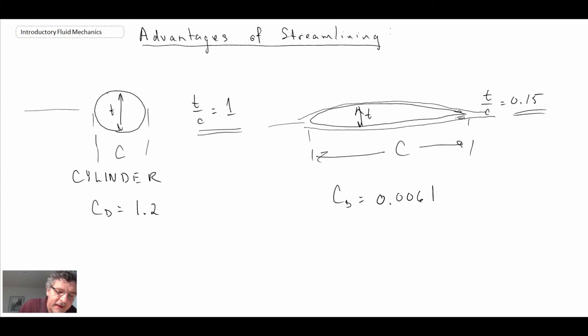Contrast that to the cylinder. At 1.2, that would mean we have a laminar boundary layer. We separate around 82 degrees. We get this massive wake forming and form drag coming there.